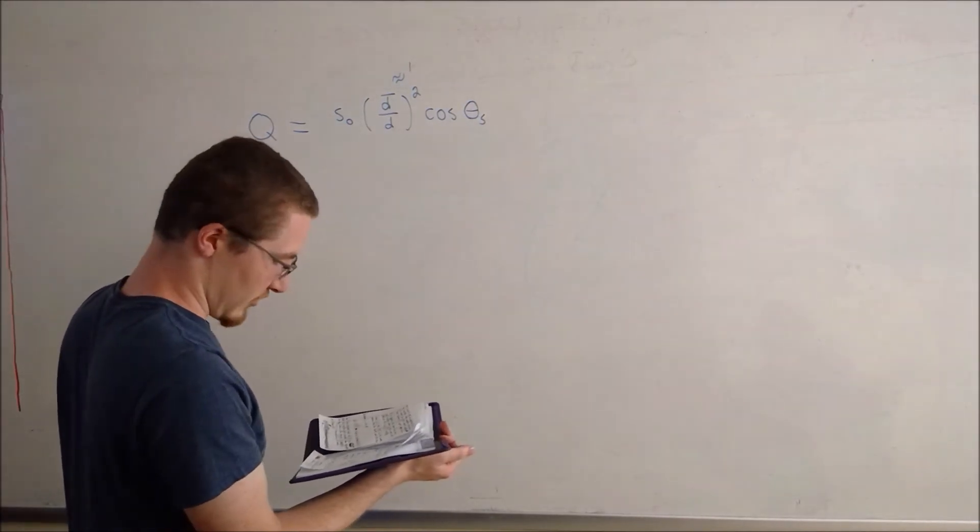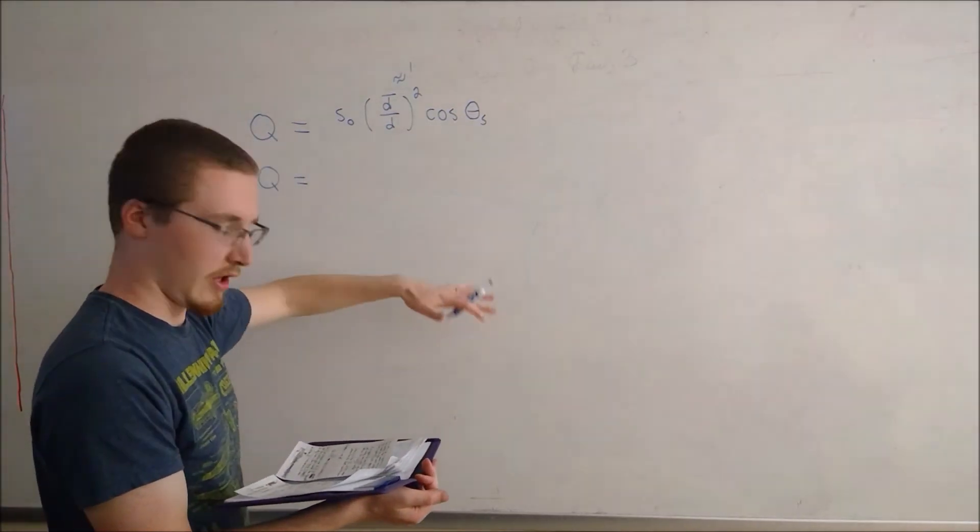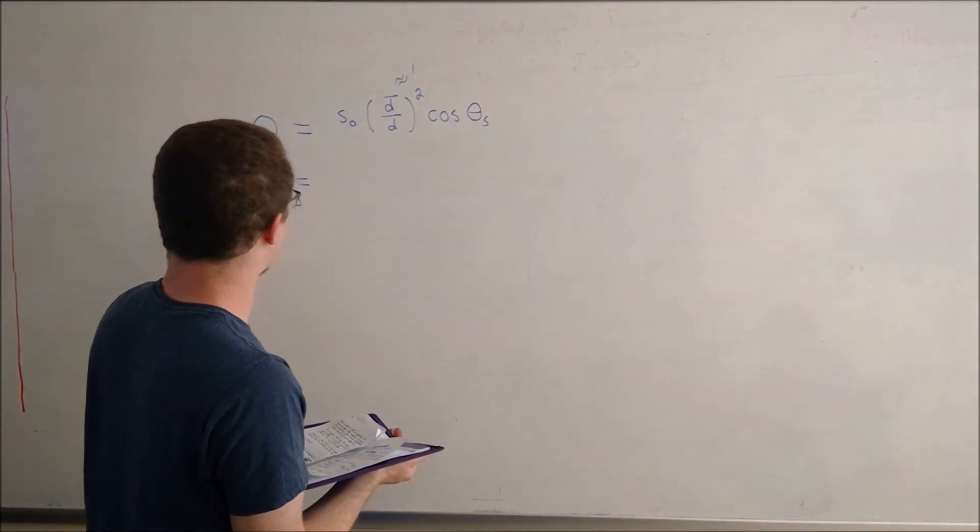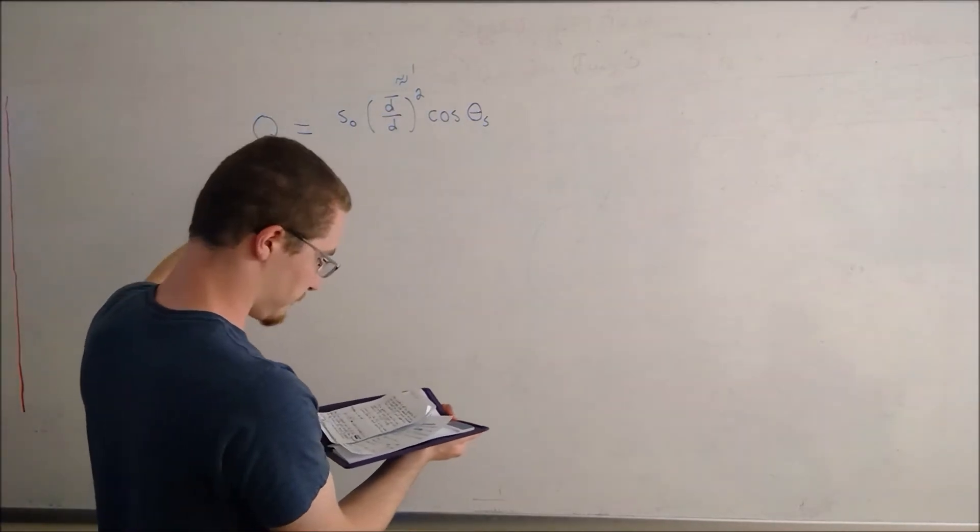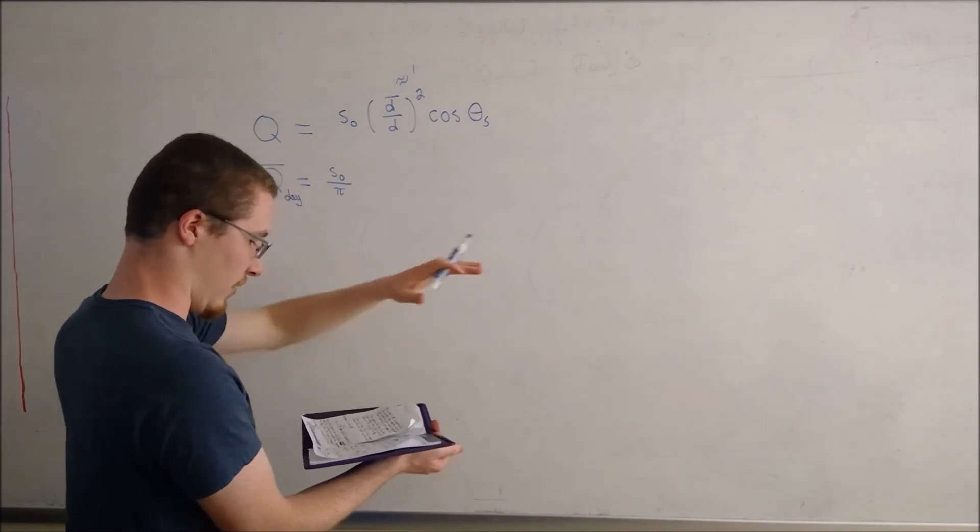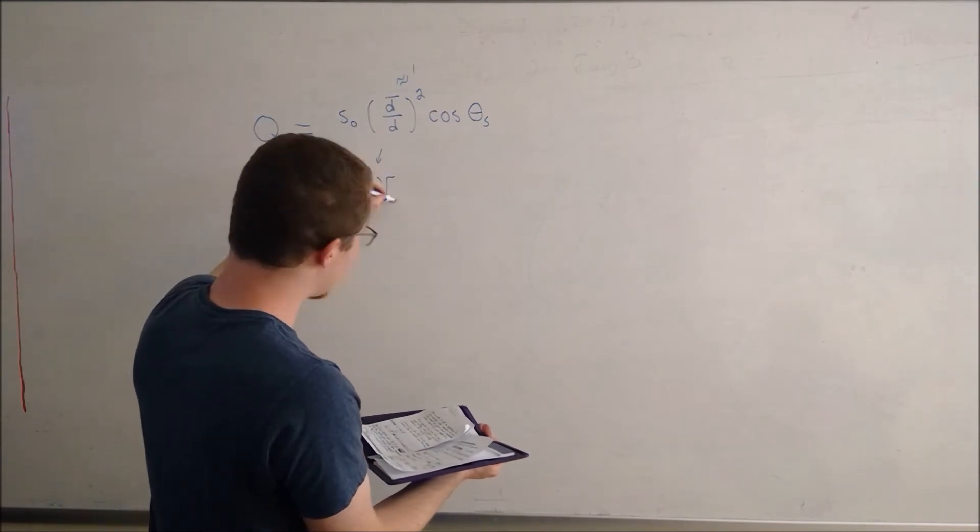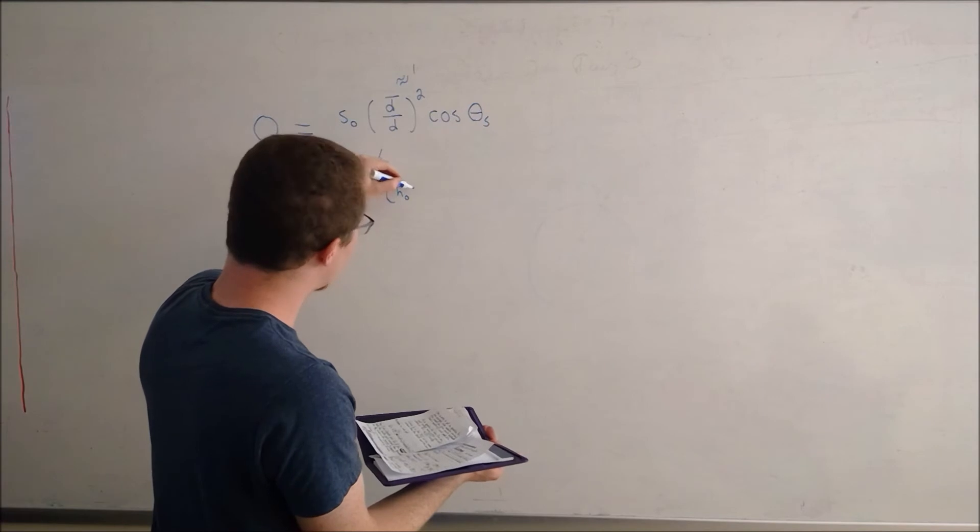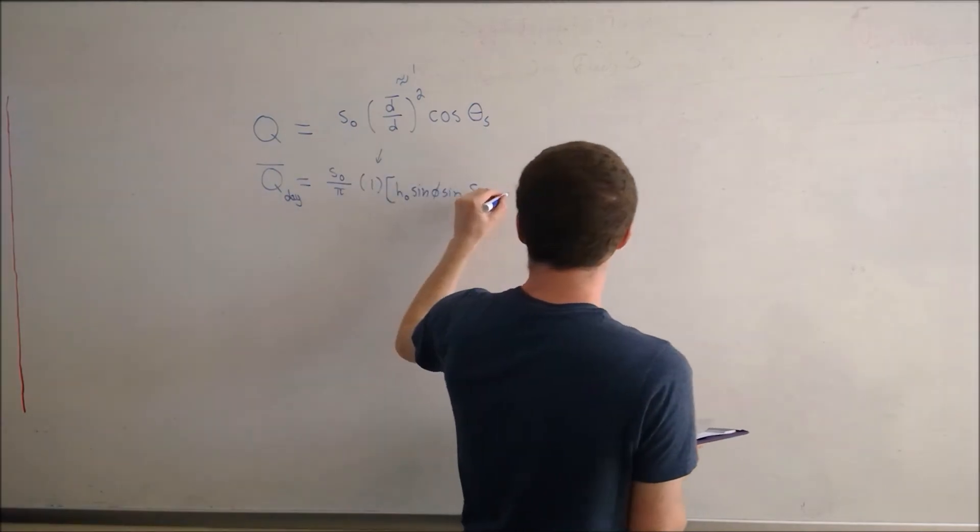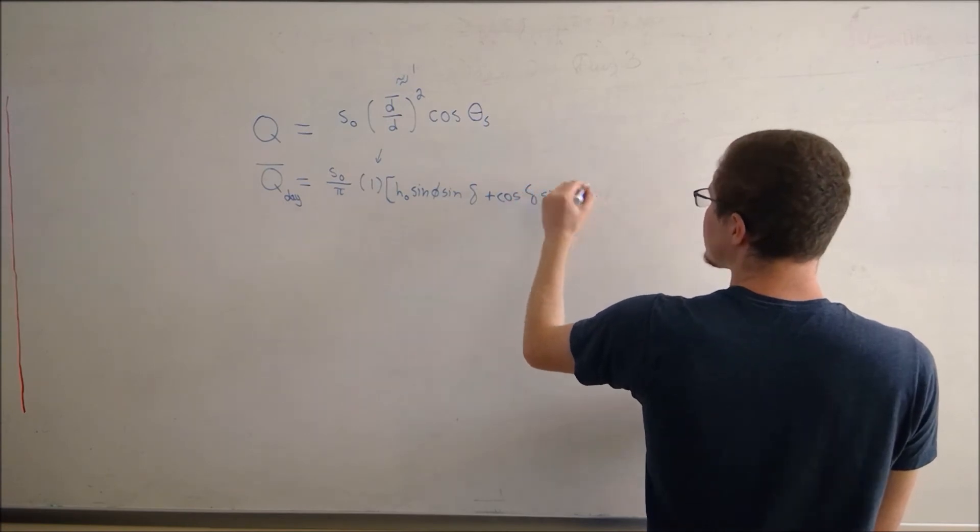So now substituting another equation in and integrating over all angles throughout the day, that was that hour angle H, we arrive at a solution for the average amount of solar radiation per day if we divide it by 24 hours as well. The total solar radiation divided by pi, that comes from integrating over all the hour angles from sunrise to sunset, times our approximation times the initial hour angle times the sine of the latitude times the sine of the declination angle plus the cosine of the declination angle times the sine of the initial hour angle.